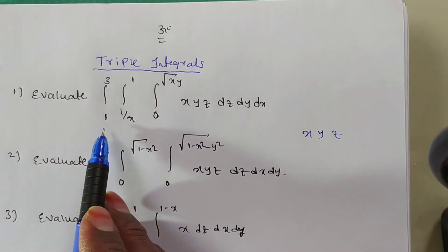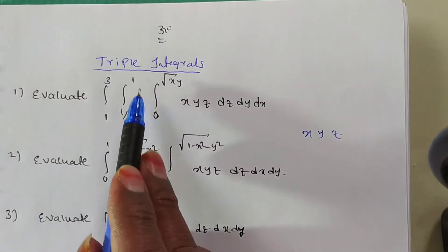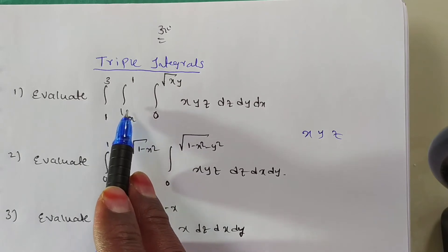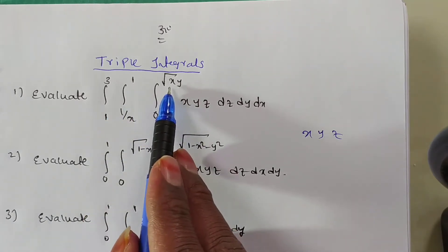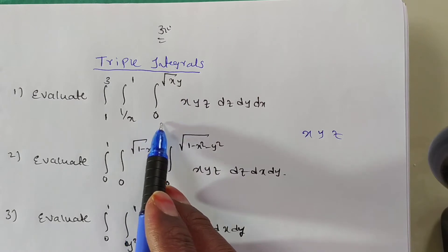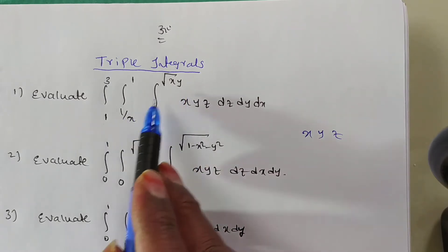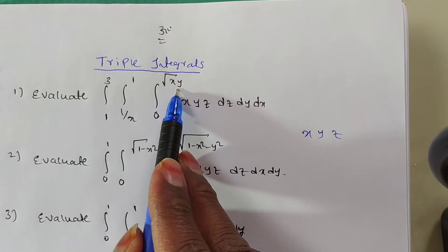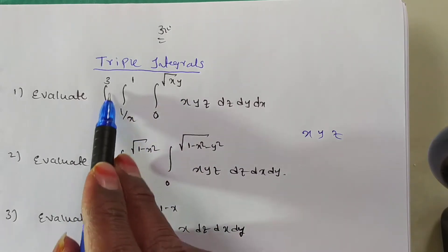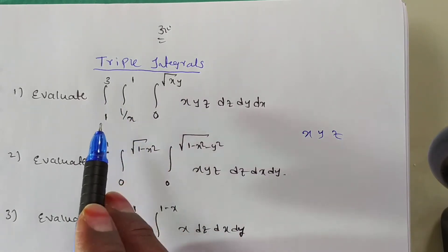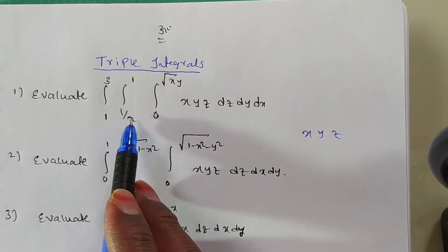Now observe: one limit is 1, 2, 3. Another limit is 1/x to 1, which is f1(x) to f2(x). Here you have x, y, so this is f1(x, y) to f2(x, y). The function here is dependent on two variables, and the other function is dependent on one variable. So the limits of x, y, z are not independent.